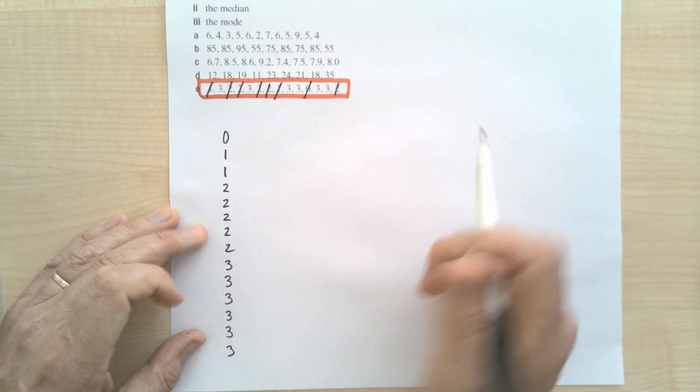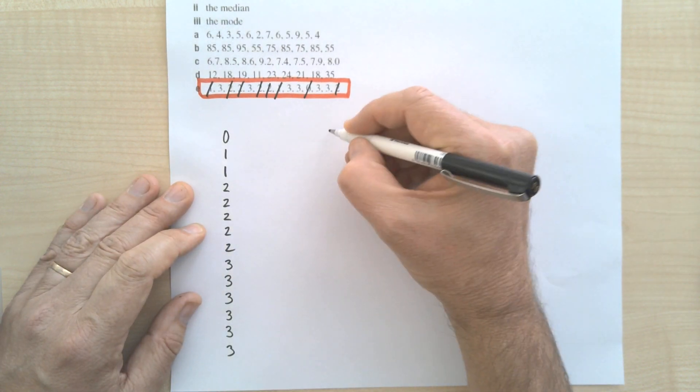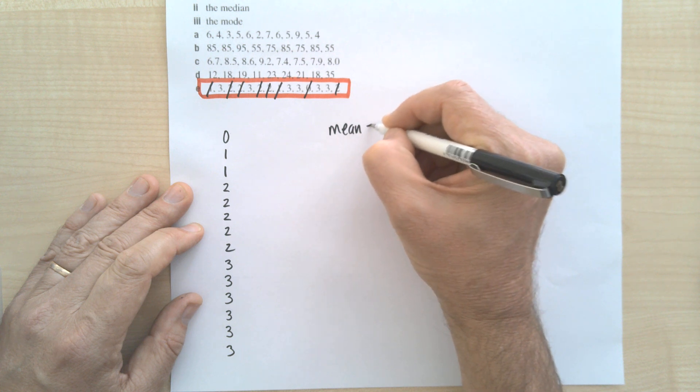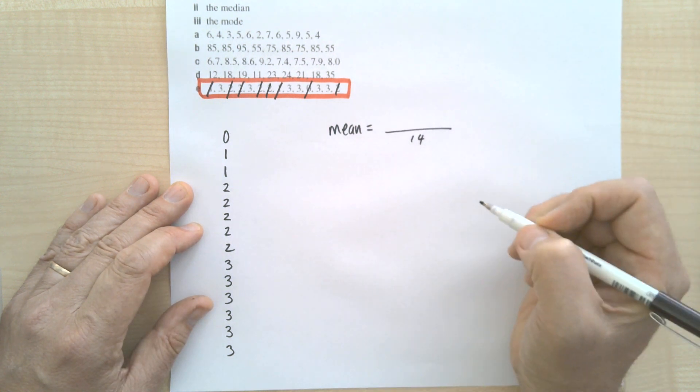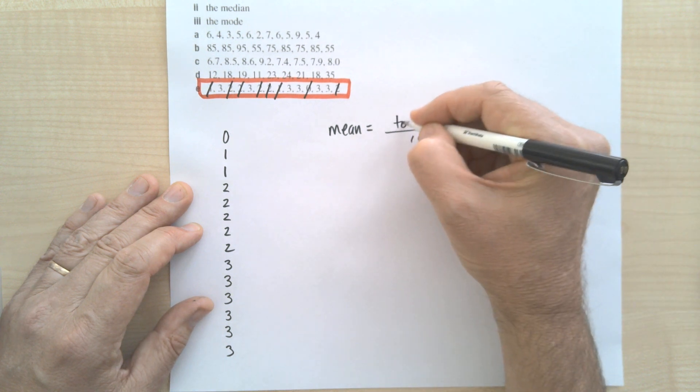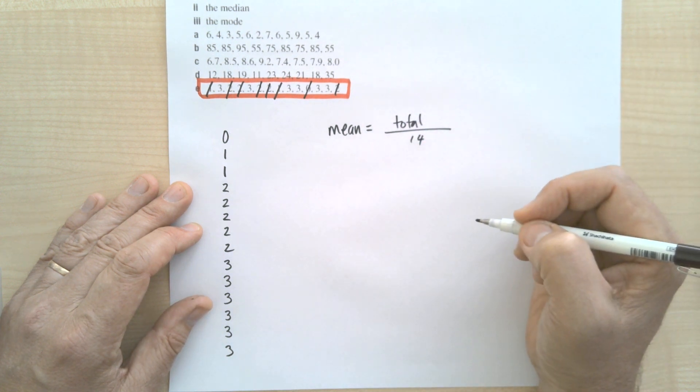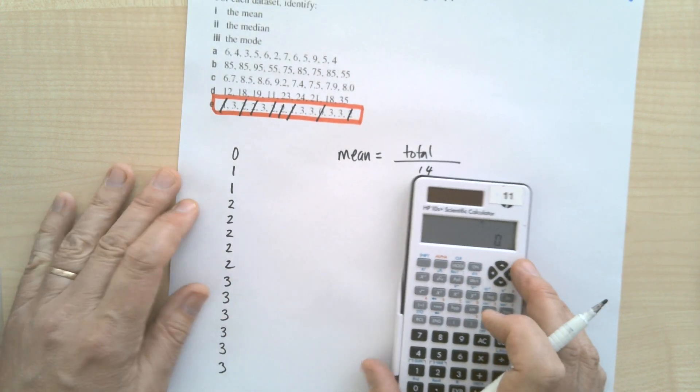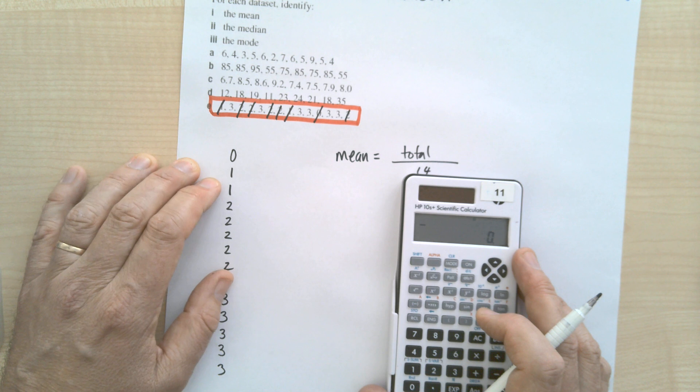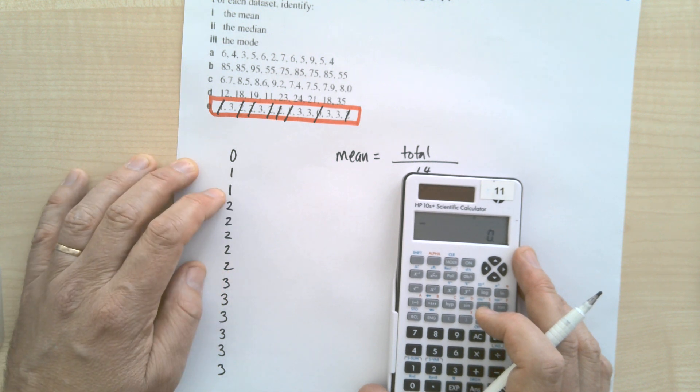Alright, so how do we do this? The mean. So the mean is just add everything up and divide by how many there are. There are fourteen. The total divided by fourteen. When you do it in your head or whatever, it doesn't matter. Zero is zero. One plus one is two.